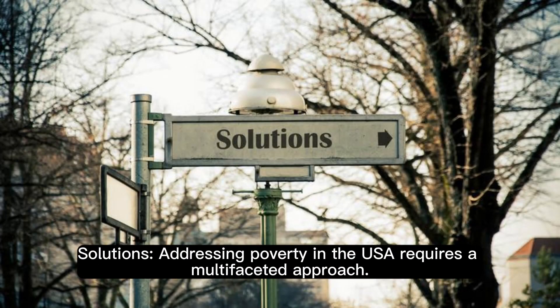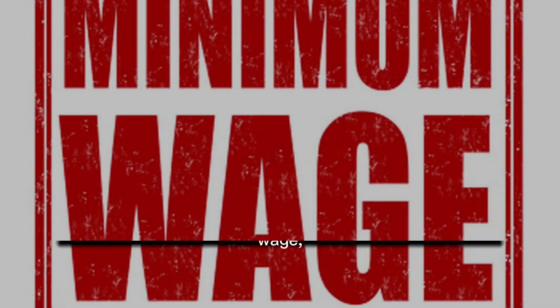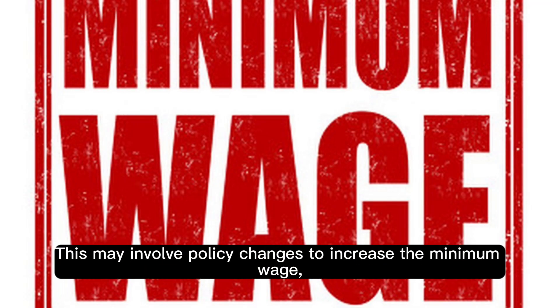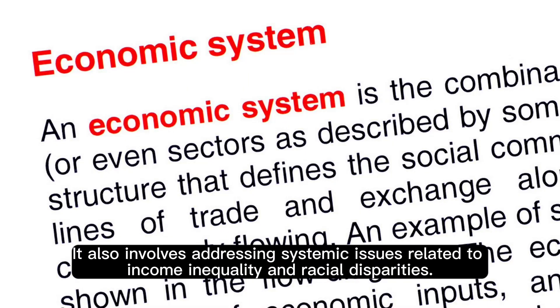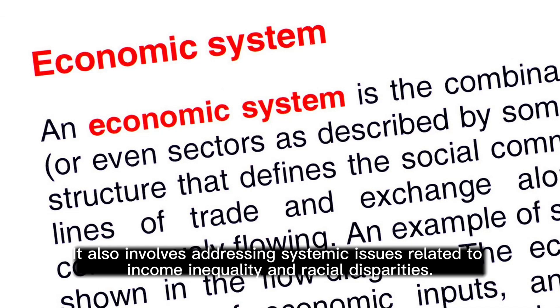Addressing poverty in the USA requires a multifaceted approach. This may involve policy changes to increase the minimum wage, improve access to education and healthcare, and create more affordable housing options. It also involves addressing systemic issues related to income inequality and racial disparities.